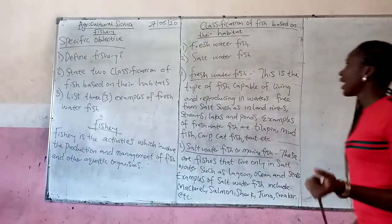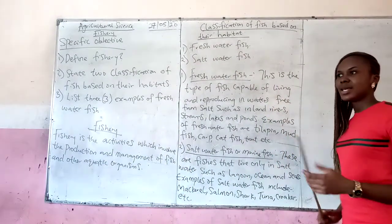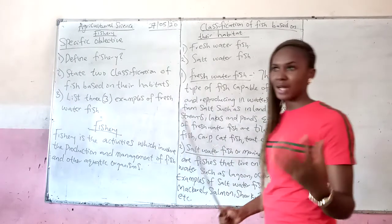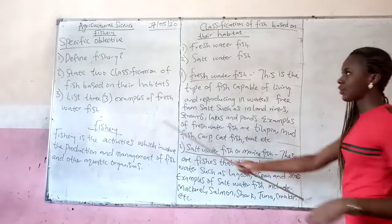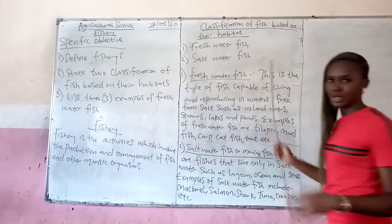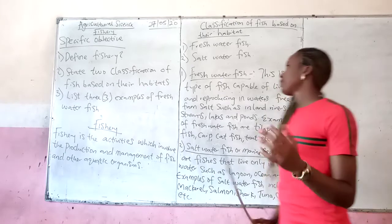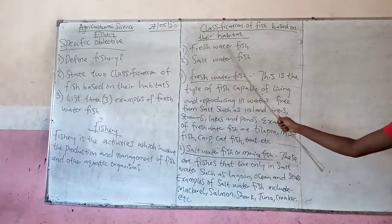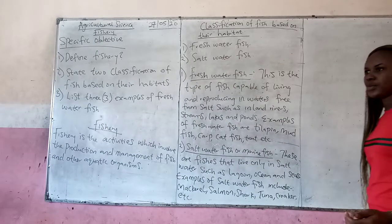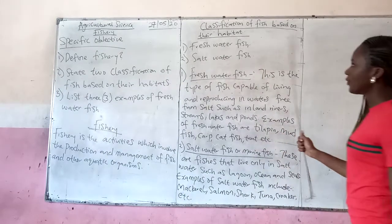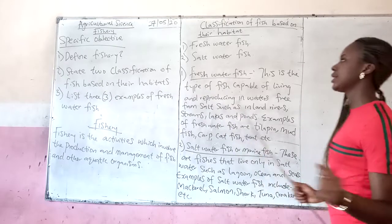We have the classification of fish based on their habitats. The habitat means the dwelling place. In terms of fishery, the habitat refers to the type of water that a particular fish requires. Now we have freshwater fish and saltwater fish. These are the main types of habitats in which fish can dwell or live.